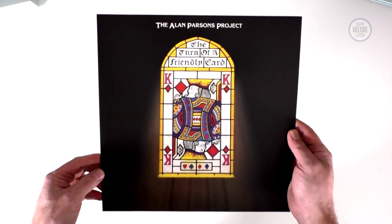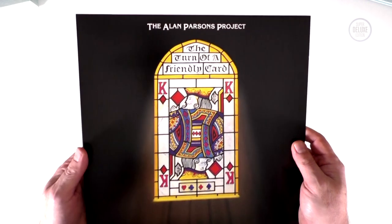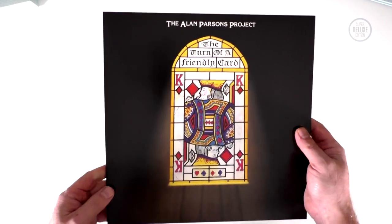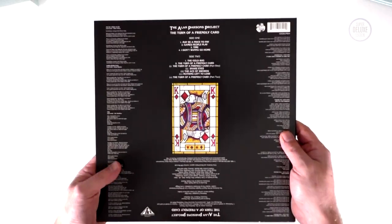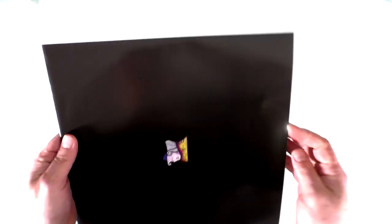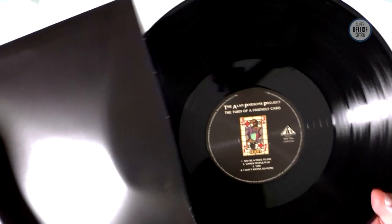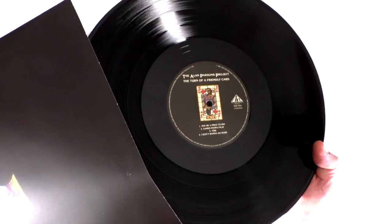The Turn of a Friendly Card. This was from 1980. I really like this album cover actually. This is a concept by Lol Creme and Kevin Godley. This is the first record that isn't a gatefold actually. So it's just single sleeve. Another printed inner. And there's the black vinyl.